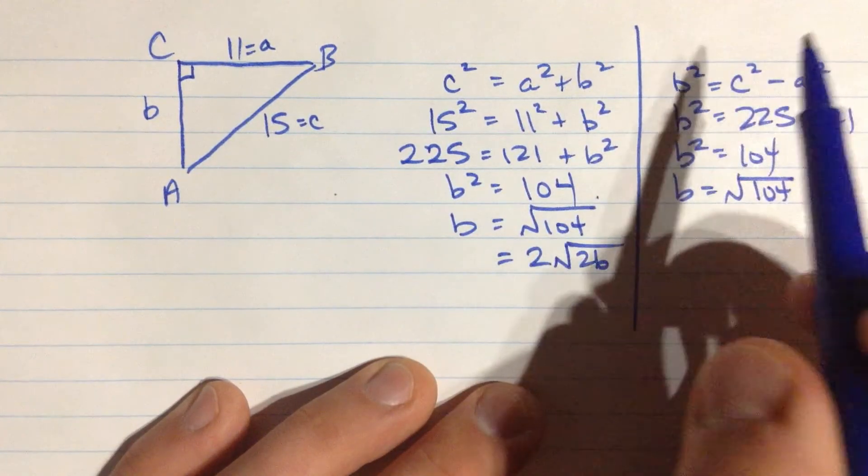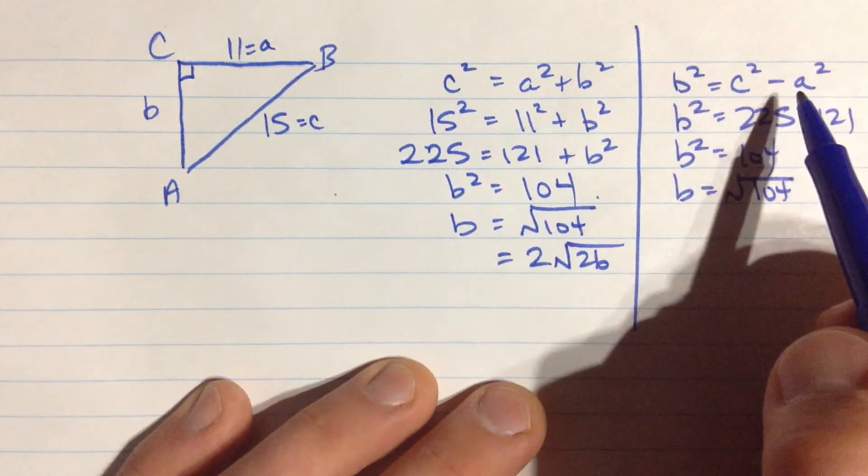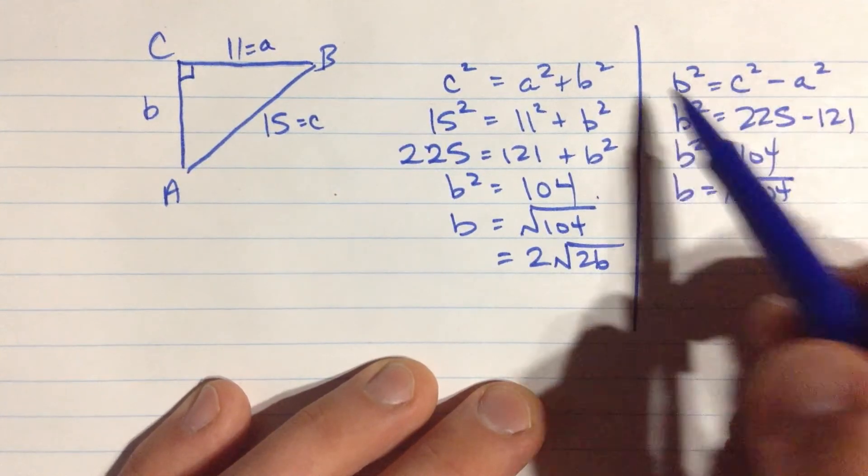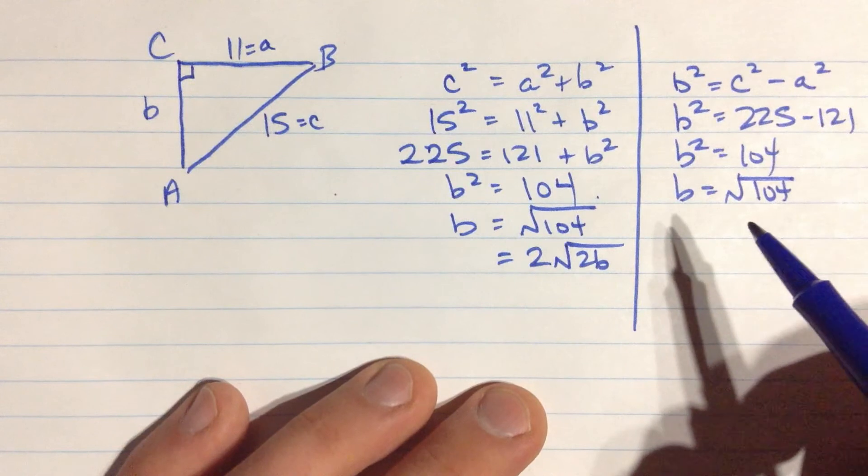Or if you want, you can sort of memorize or realize the other version of this. A short side is the long side minus the other short side, the squares of all of those things. So, that's the Pythagorean Theorem.